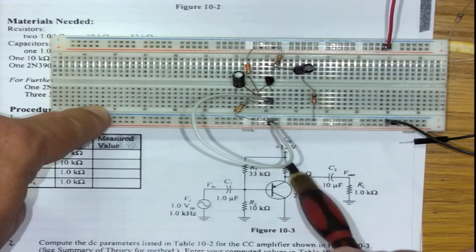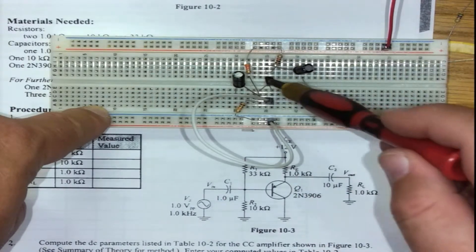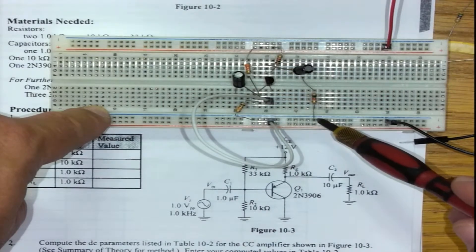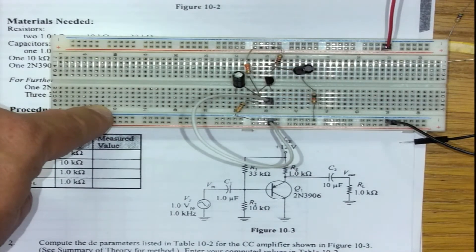Orientate your components so that you can have easy access to the base, the collector, and the emitter. Then start in a logical fashion, usually left to right with the components being connected. If you do that correctly, your circuit may look something like this example. That is how you assemble the common collector amplifier. Thank you very much.